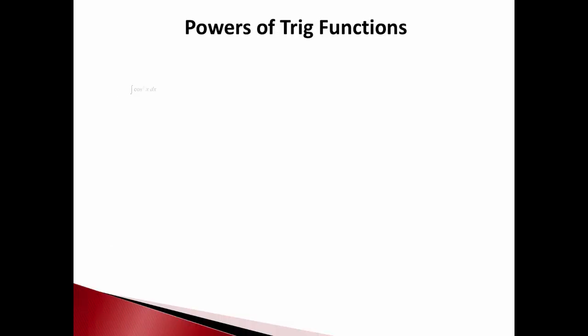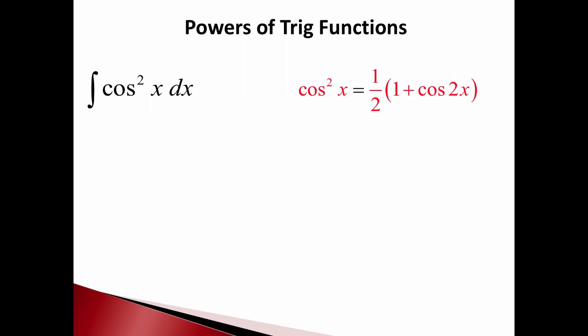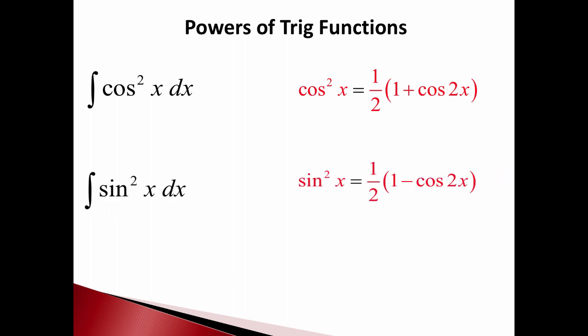For example, we've seen integrals of cosine squared before. We had a trig identity that we could use. So we know that cosine squared of x equals 1/2 times (1 plus cosine of 2x). We could do the same thing with sine squared, and we use the identity that sine squared of x is 1/2 times (1 minus cosine of 2x). Either way, sine squared and cosine squared get turned into expressions that have a cosine of 2x in them.